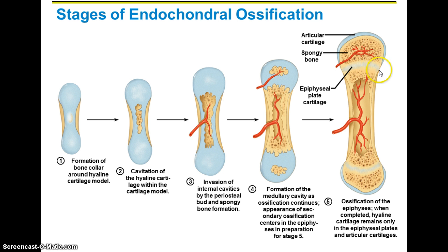We've also got the epiphyseal plate, known as the growth plate, which is made up of cartilage. The epiphysis and the diaphysis push away from each other — that's how the bone grows in length — due to the cartilage going through mitosis and spreading the bone apart. Over time as you get older and your bones harden, that epiphyseal plate will diminish and just form an epiphyseal line.